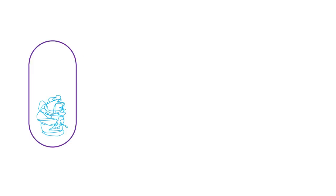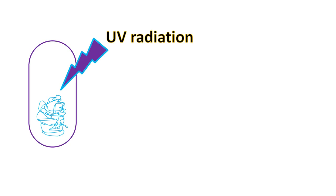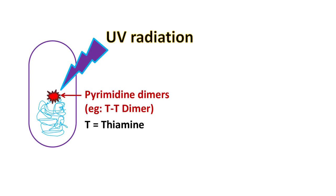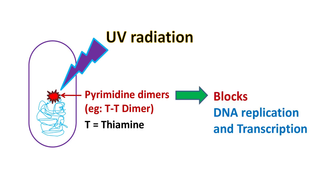The DNA of prokaryotes is highly sensitive to radiation such as UV radiation. UV radiation usually induces the formation of pyrimidine dimers in the DNA. The presence of these pyrimidine dimers usually halts physiological processes such as DNA replication and transcription required for the survival of cells. Hence, it becomes necessary for the cells to remove pyrimidine dimers from the DNA.